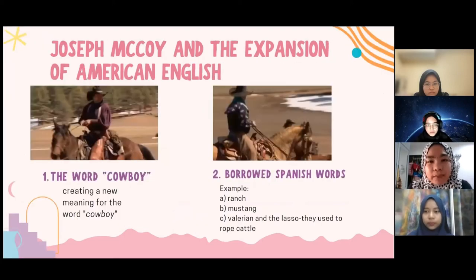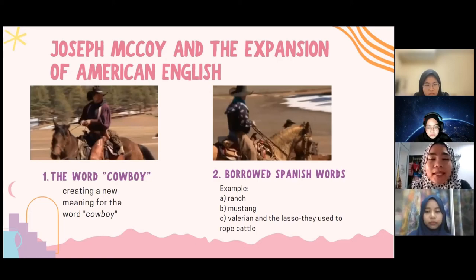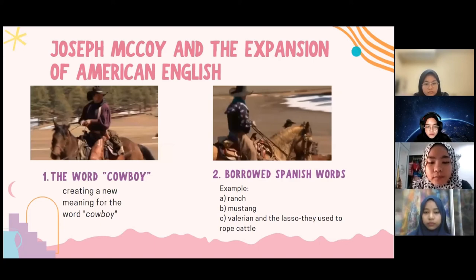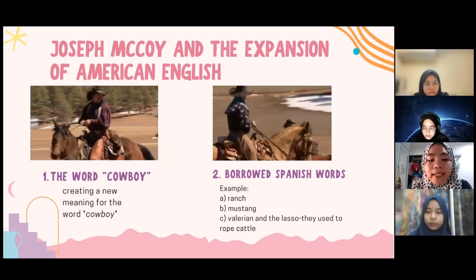How do we relate Joseph McCoy to the expansion of American English? Joseph McCoy gave the world a catchphrase — the cowboy. The English had known the word cowboy since the 18th century, but now it took on a new currency and new meaning. He also turned the word cowboy into a national icon. The expansion of American English by Joseph McCoy also led to borrowing new words from Spanish, because cowhands had been working near the Mexican border for years, picking up Spanish words.